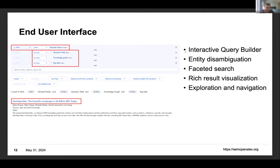I want to specify my search further — to find results, in the first place we will only get works that have the topic 'semantic web', 'knowledge graph', and 'big data'. Building this faceted search, we get back the work 'SemOpenAlex: The Scientific Landscape in 26 Billion RDF Triples', which is our paper published last year at the International Semantic Web Conference.